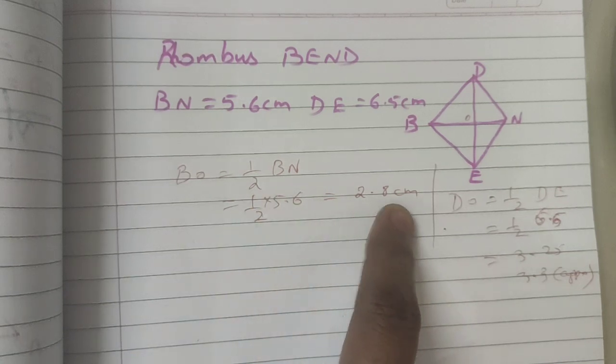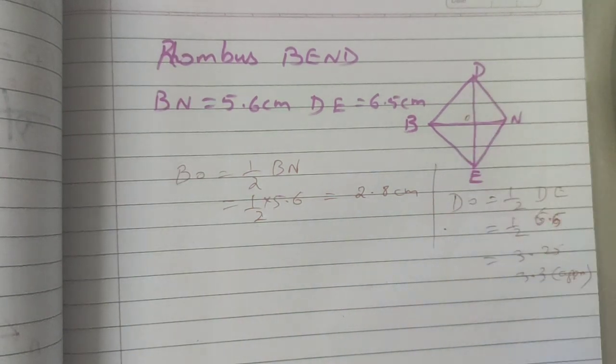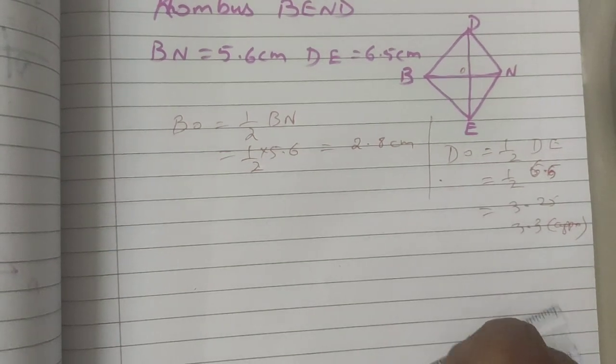So just calculate 2.8 cm. Like that find out DO also just for reference. Is it clear? So now I am going to construct.